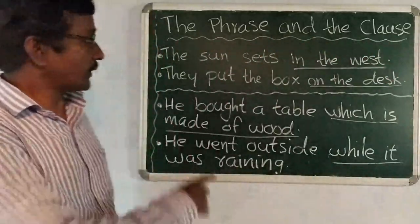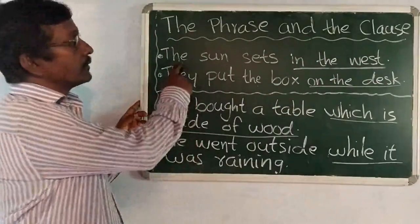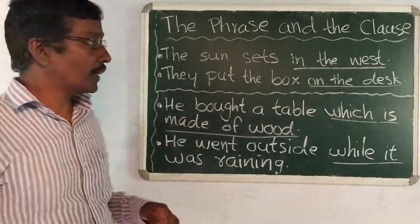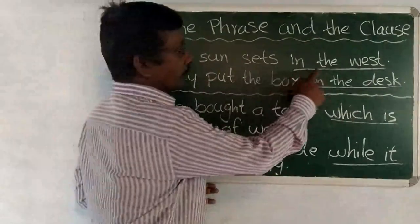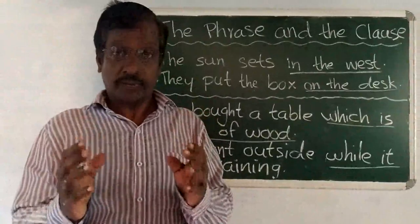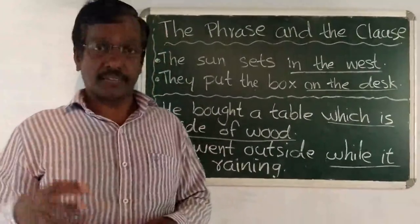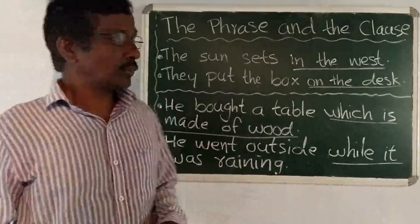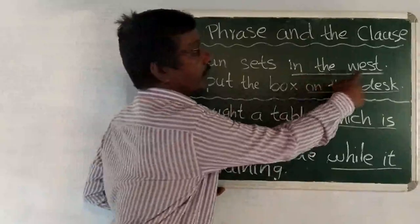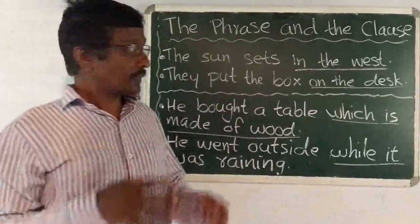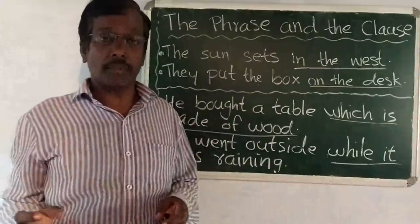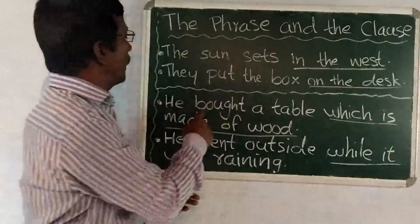Look at these examples. I have written a sentence: 'The sun sets in the west.' In this sentence, the words 'in the west' are a group of words. It gives us sense but not complete sense. So, this is a phrase. 'In the west' is a phrase — it gives us sense but not complete sense.